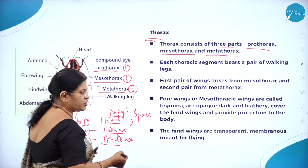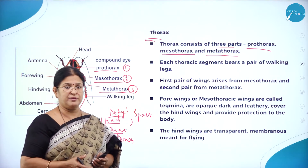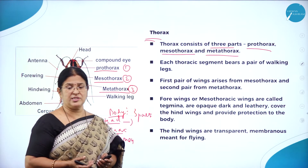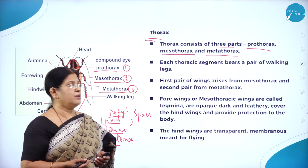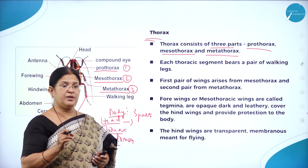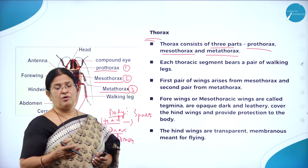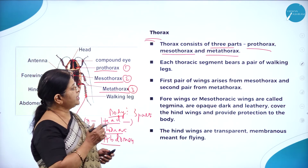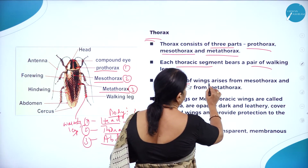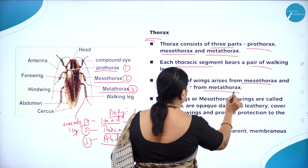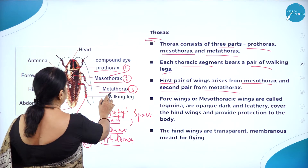Cockroaches are also carriers of diseases because they move around food items. You should be careful about this nocturnal household pest. The legs have hairy-like structures called bristles, which also contribute to spreading diseases. Each thoracic segment has a pair of walking legs. The first pair of wings arises from the mesothorax and the second pair from the metathorax.